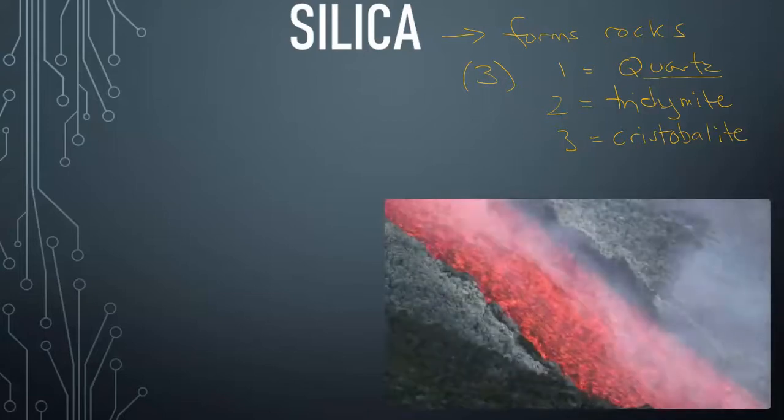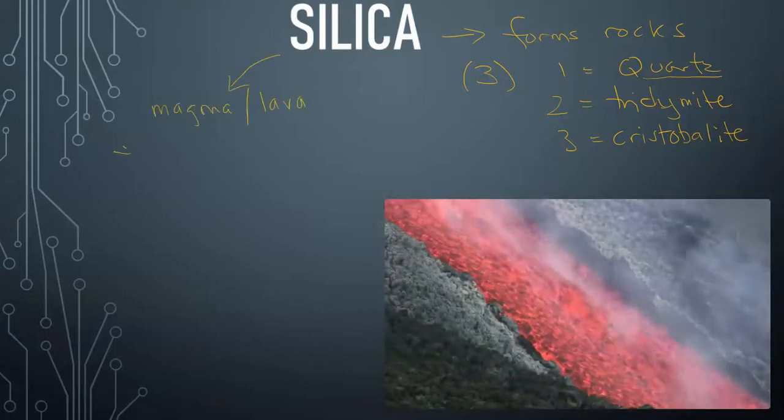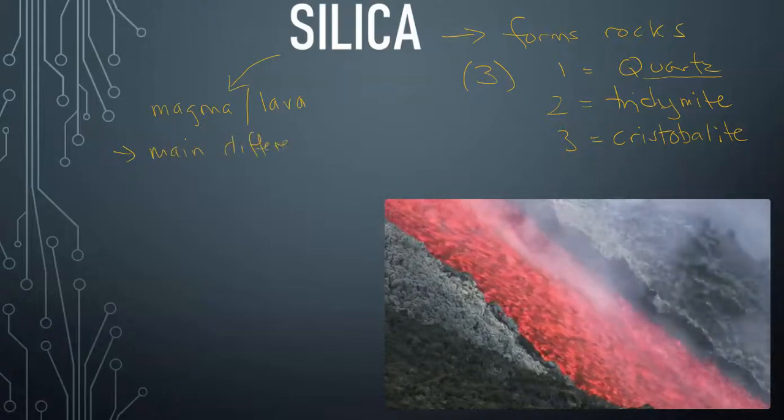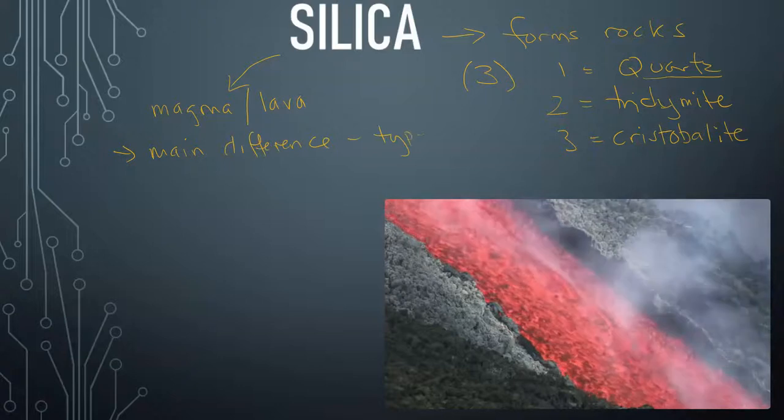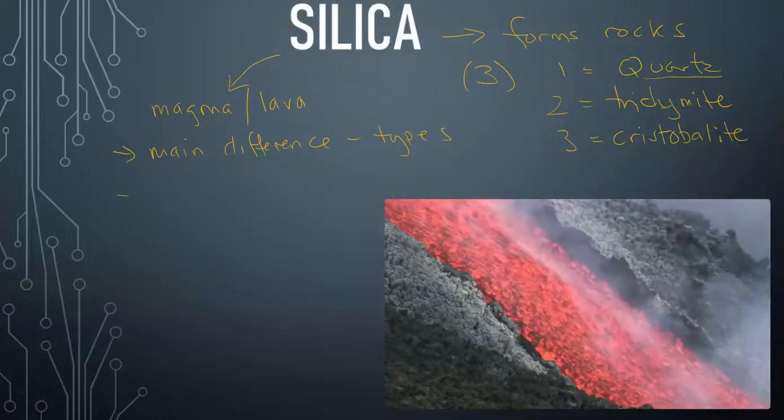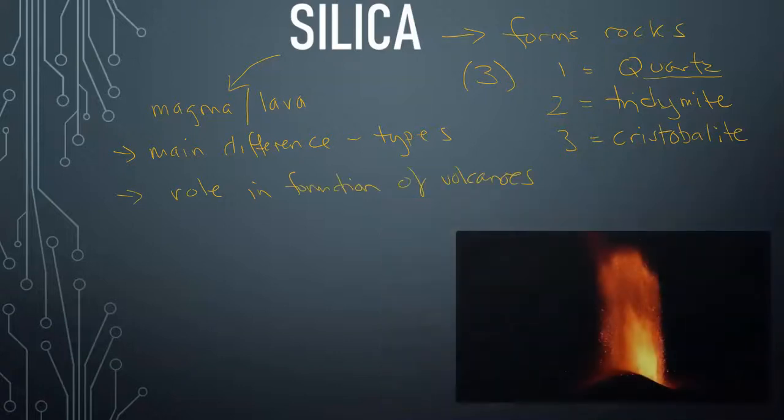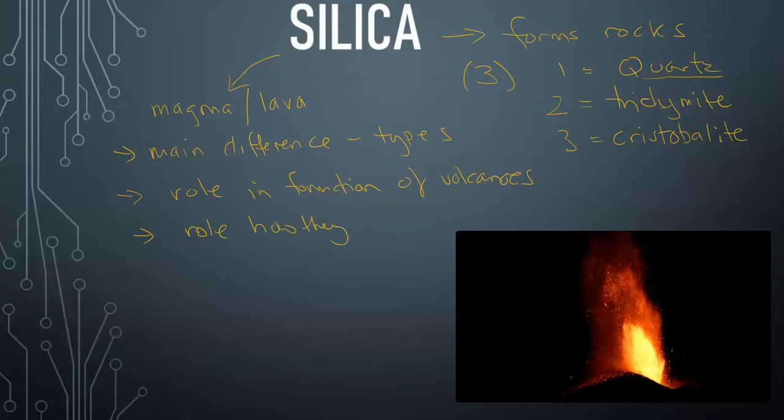So in terms of magma and lava, silica is the main control or main difference when it comes to the types of magma and lava. And this is going to play an important role in the formation of volcanoes and play a large role in how they erupt based on the silica.